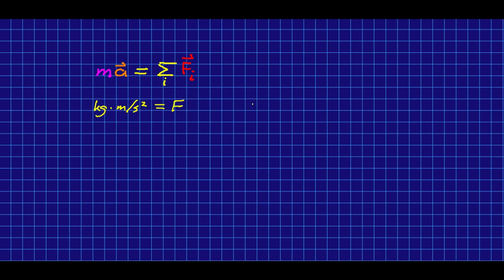We define one newton—that is the name of this force—as one kilogram meter per second squared. So you can think of it as the force that will cause a one kilogram object to accelerate at one meter per second squared.